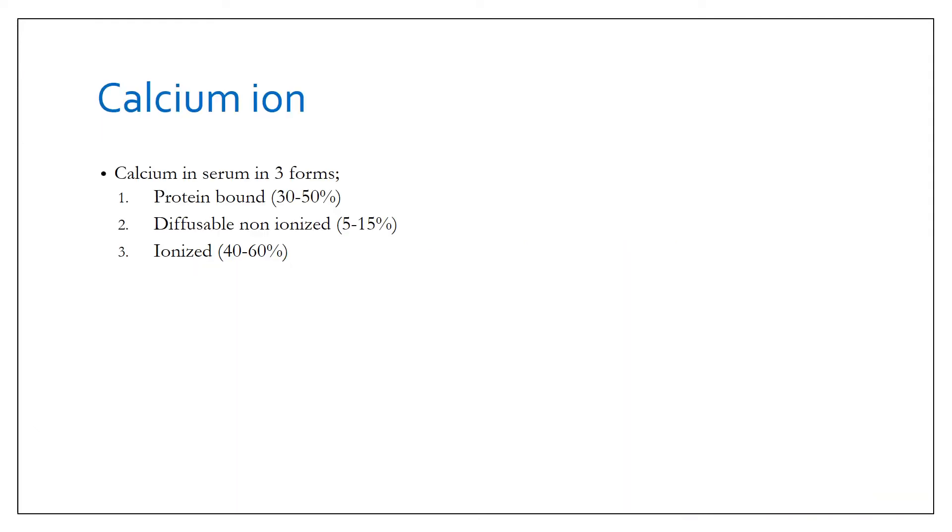You must understand that calcium is available in the body in three forms. First is the protein bound form, which is up to the tune of around 50%, 30 to 50%. Second is a diffusible non-ionized form.